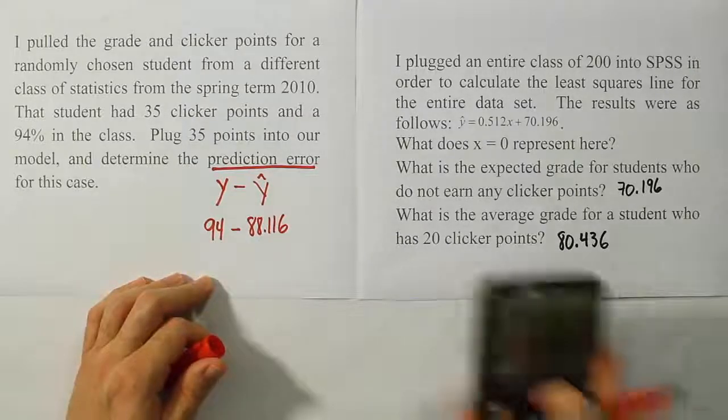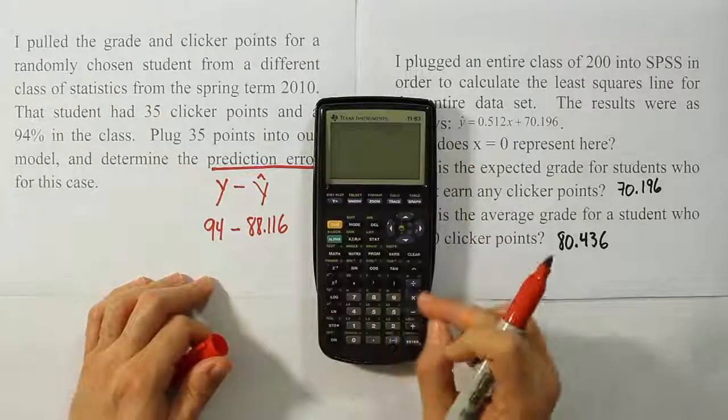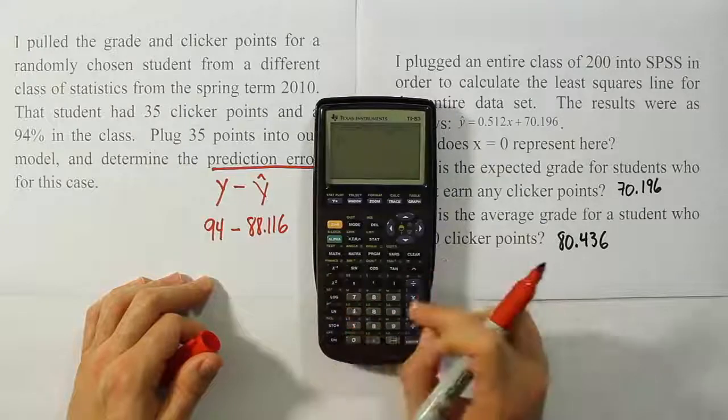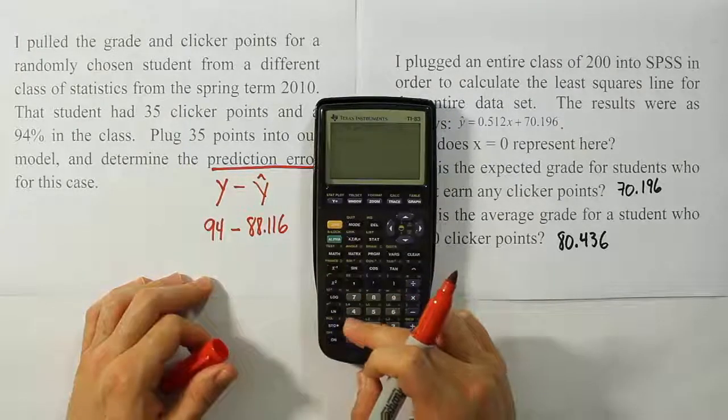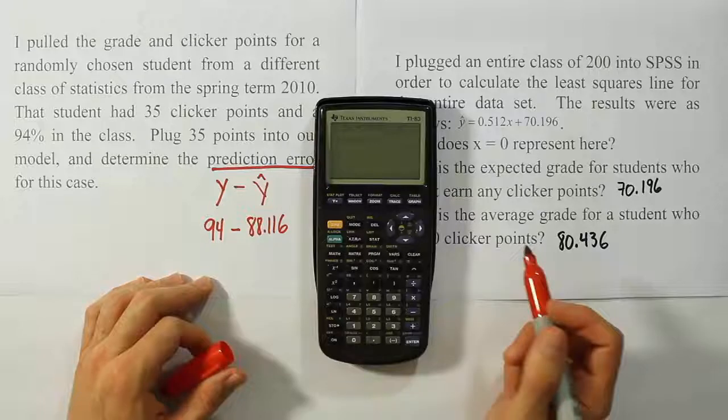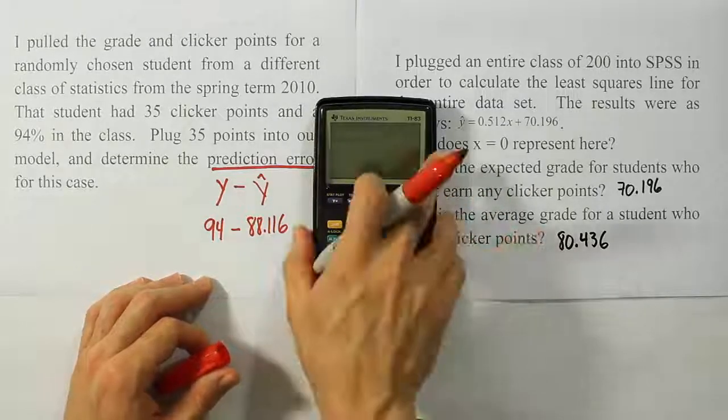Alright, now from there, we're just going to do the subtraction to figure out the actual difference between these numbers. So 94 minus 88.116. And when we're done, we get the answer 5.884.